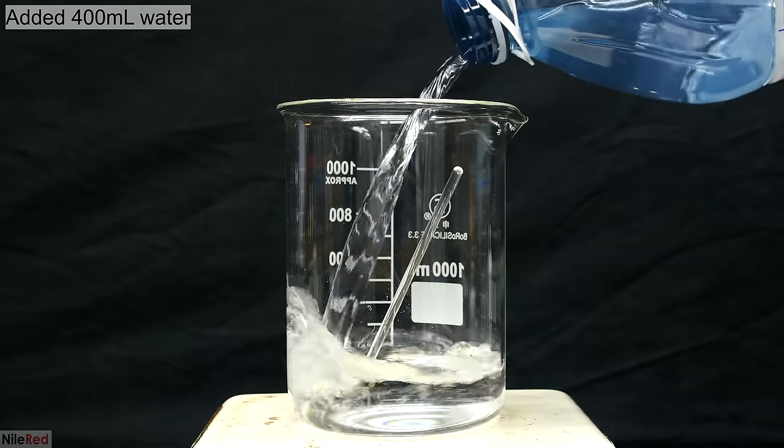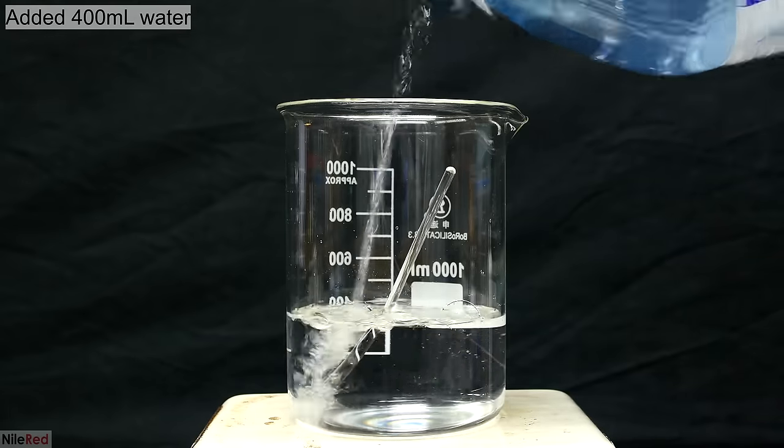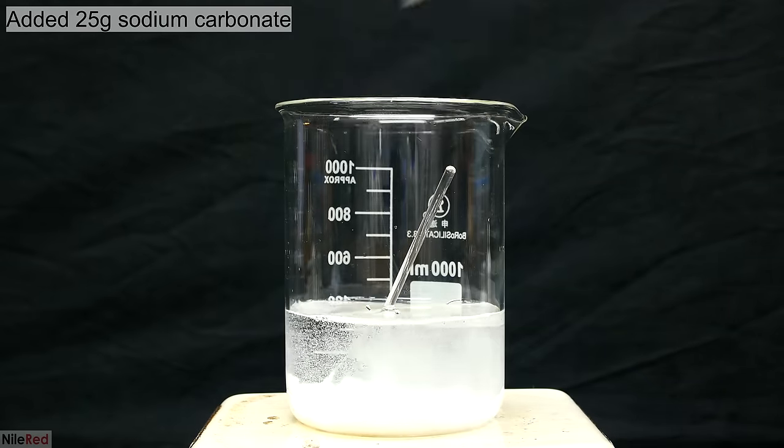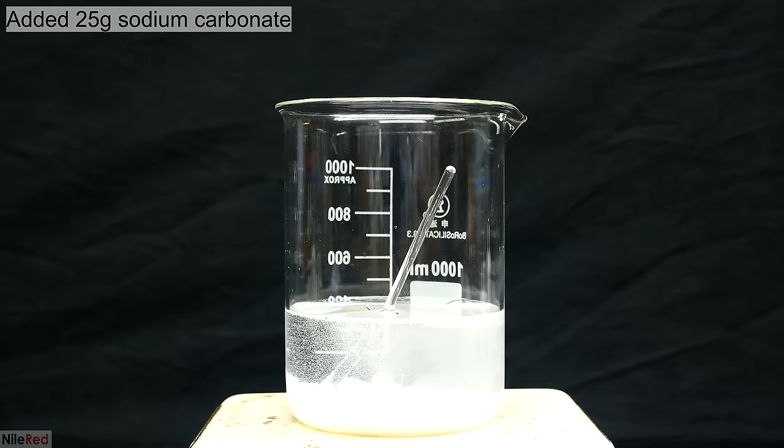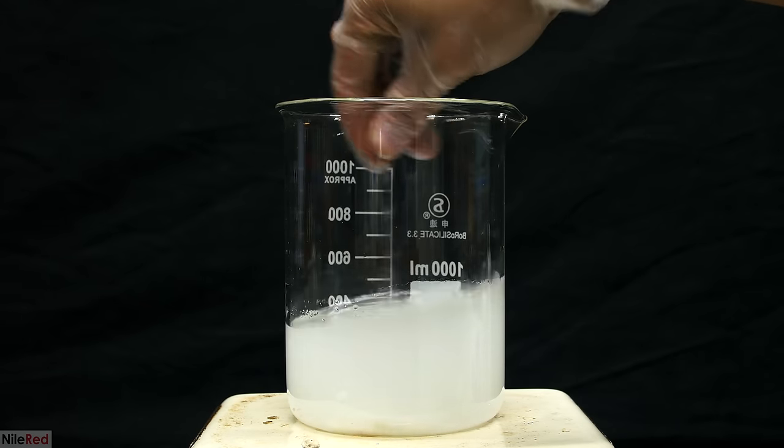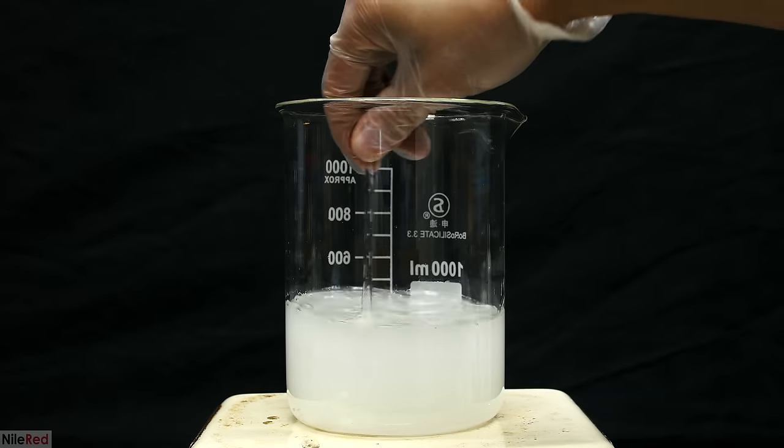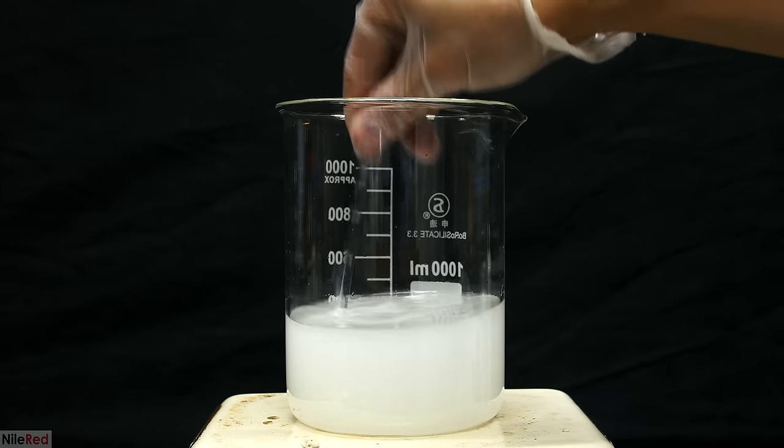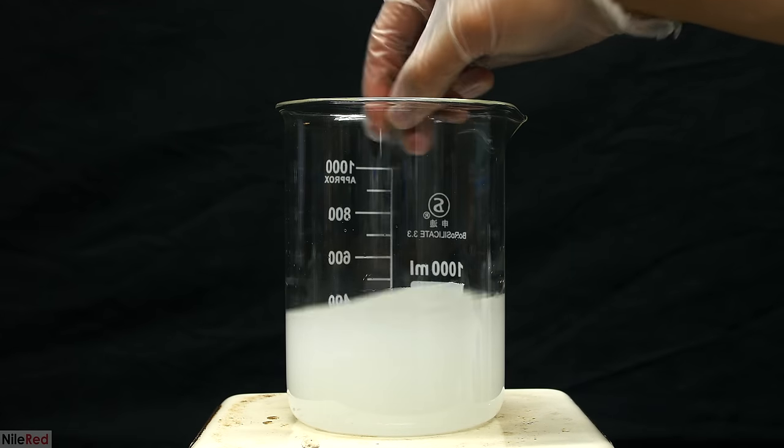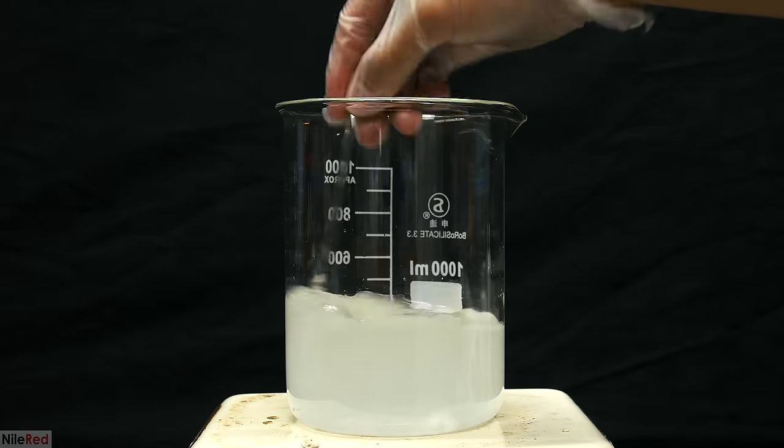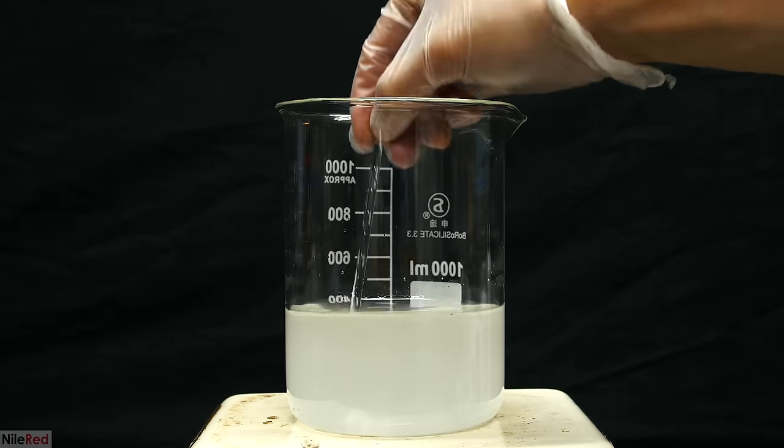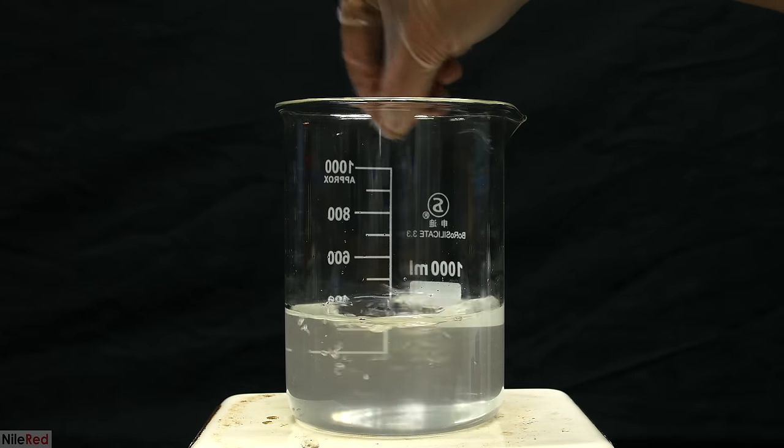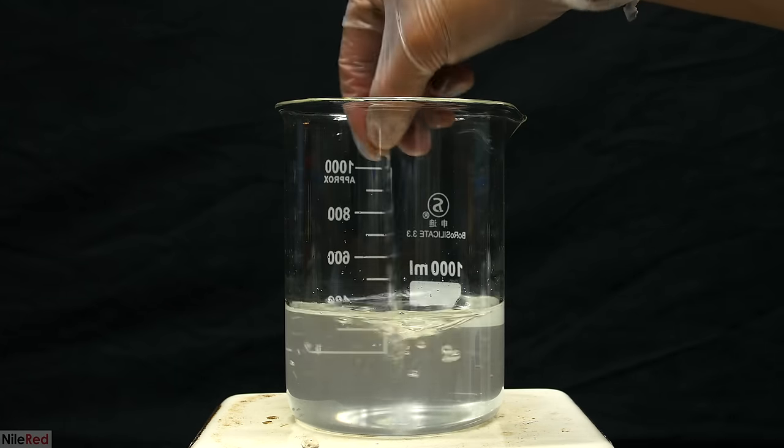To start things off I add 400 milliliters of distilled water to a beaker. To the water I added about 25 grams of anhydrous sodium carbonate. Using a glass stir rod I mix things around until everything has completely dissolved. At the same time I turned on the hot plate and heated things up. Heating helps dissolve the sodium carbonate, but it's also needed for the next step to work. I'd say something around 90°C is good.